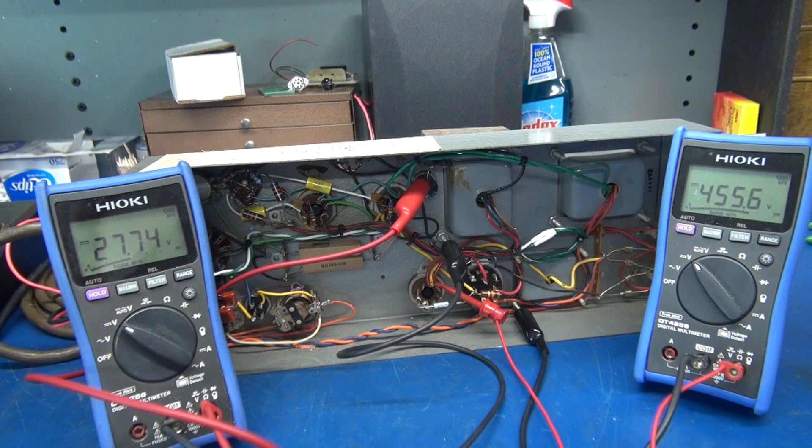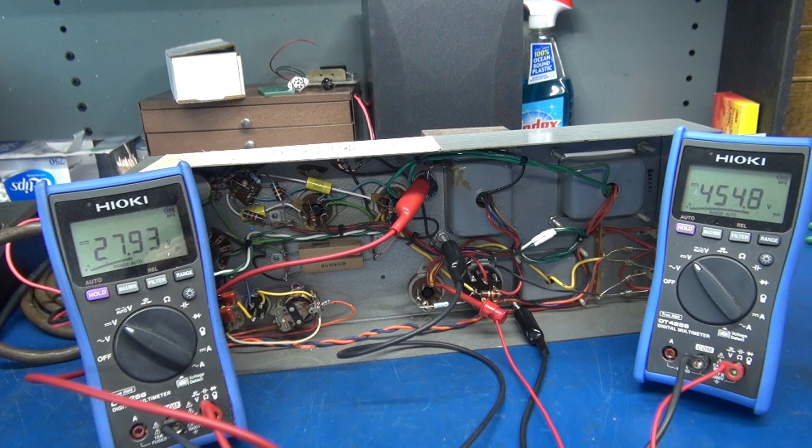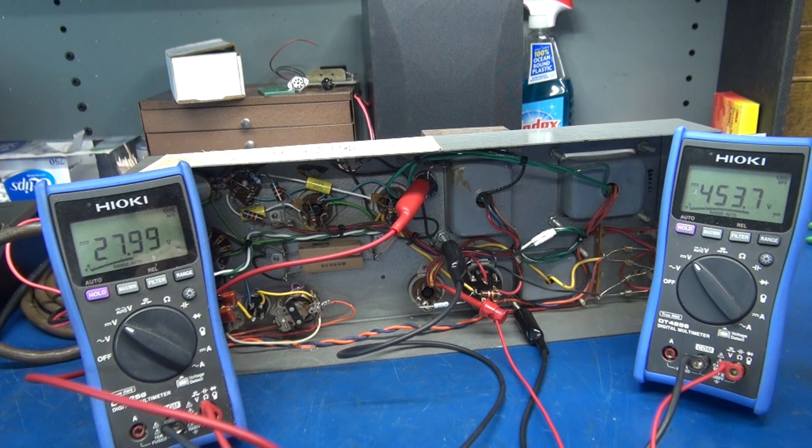I got the amplifier powered up. The meter on the left is monitoring the cathode voltage. According to the schematic it should be 25 volts. You can see that's running high. This is my plate voltage meter on the right.